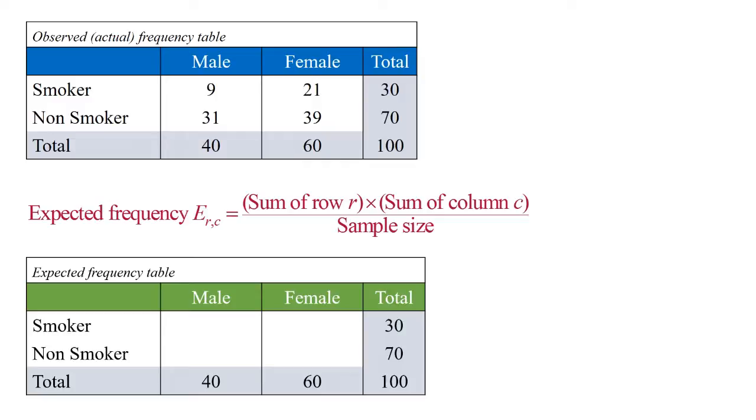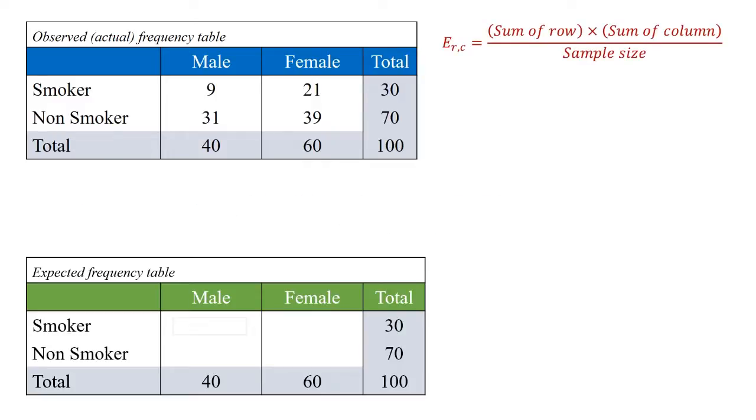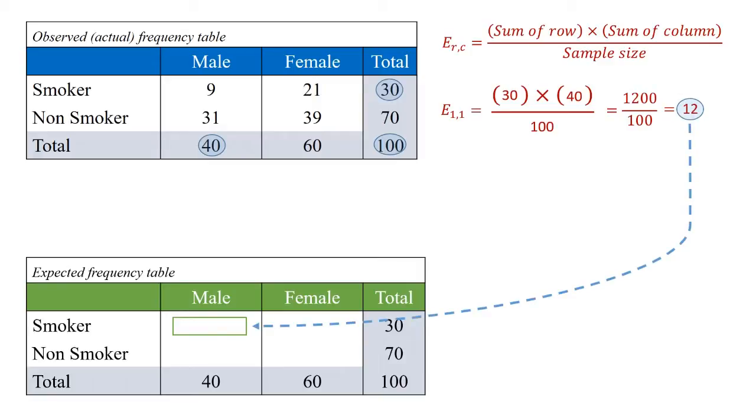Let's start with the first calculation in the upper left-hand corner: male smokers. To do this, we take the total number of smokers, 30, times the total number of men, 40, and then divide that by the sample size. 30 times 40 divided by 100 equals 12. That's the value we put into the expected or theoretical frequency table.